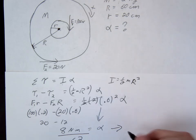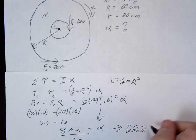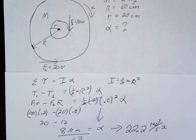And what are the units for alpha? Radians per second squared.